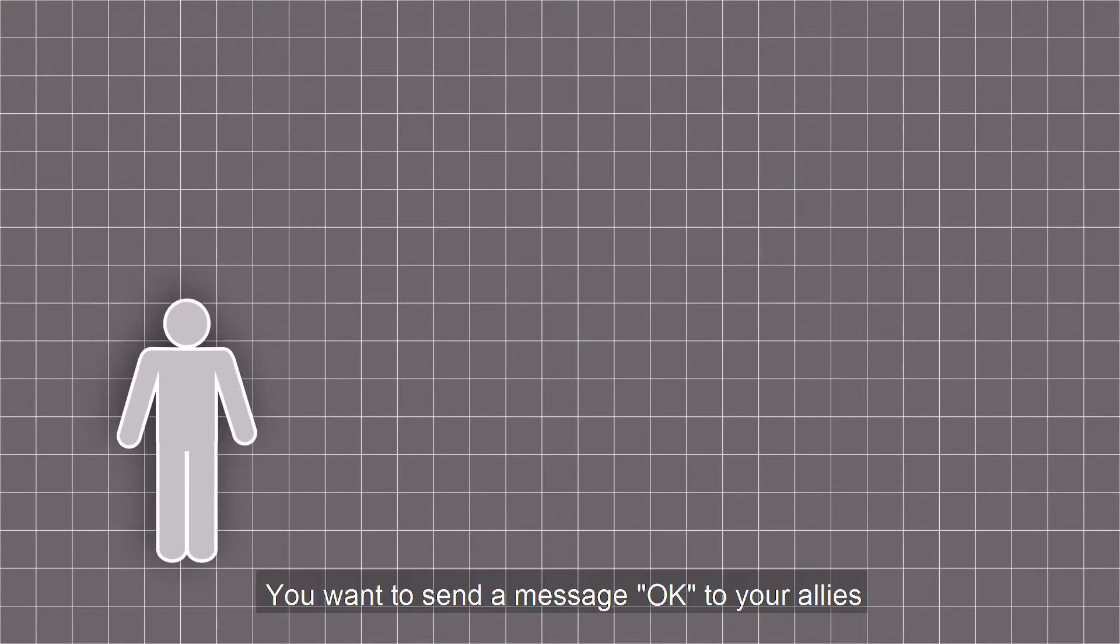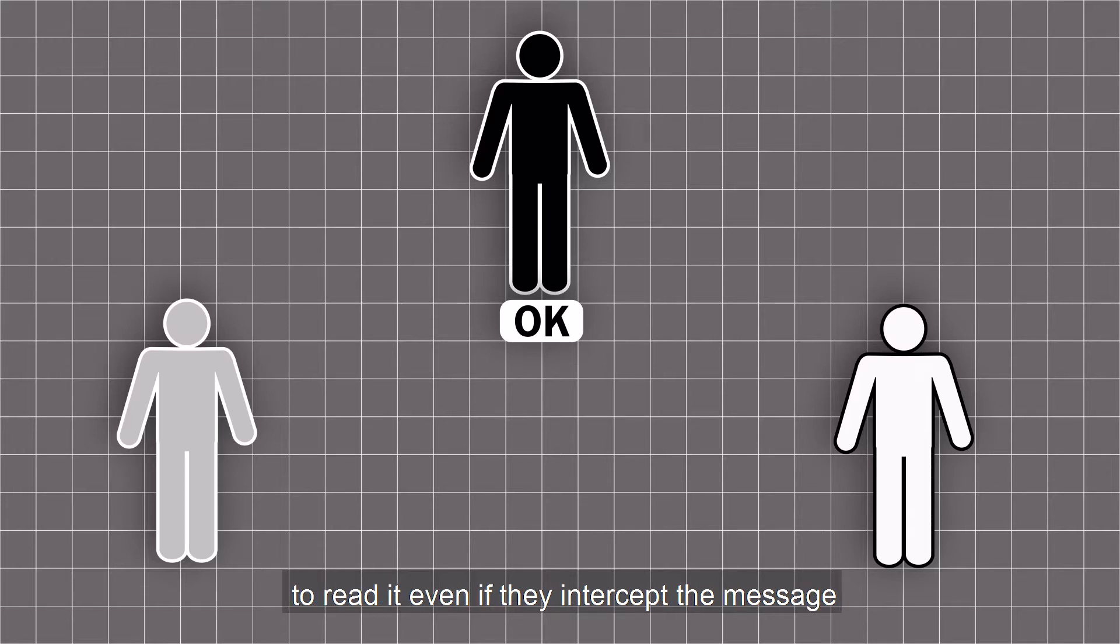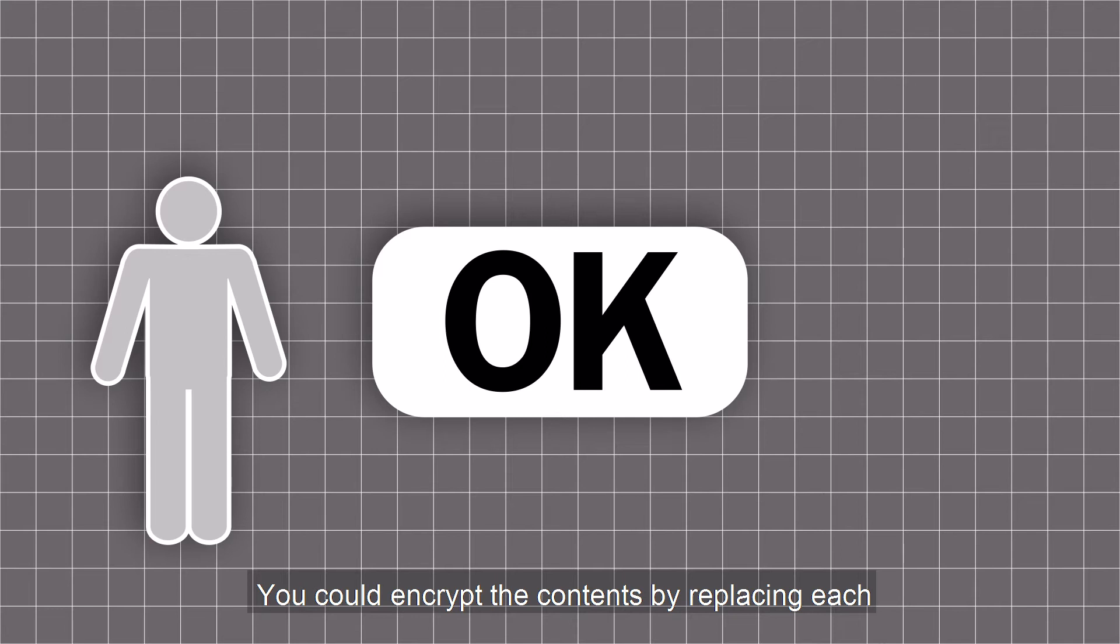You want to send a message, OK, to your allies, but do not want the enemy to be able to read it even if they intercept the message. You could encrypt the contents by replacing each letter in the message with another letter.